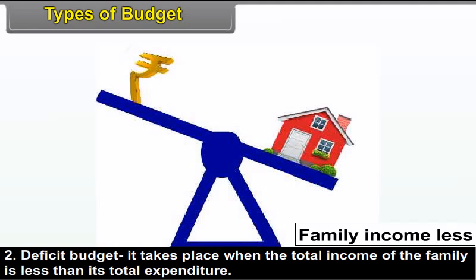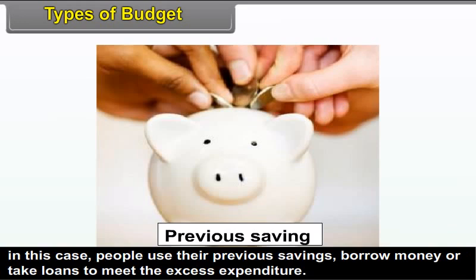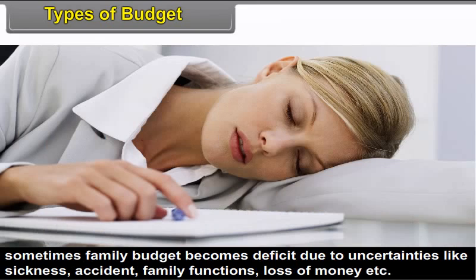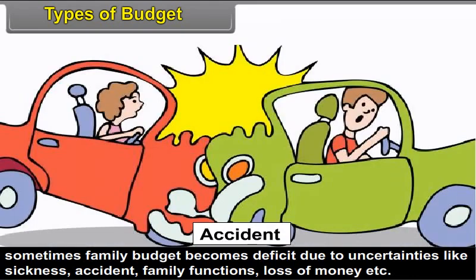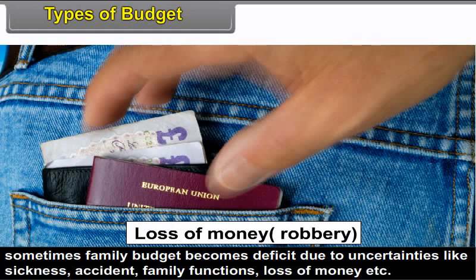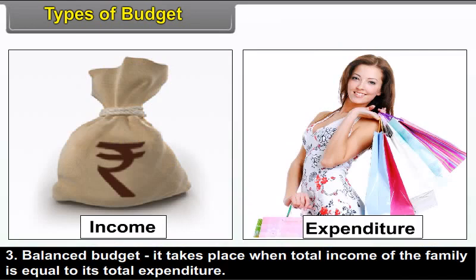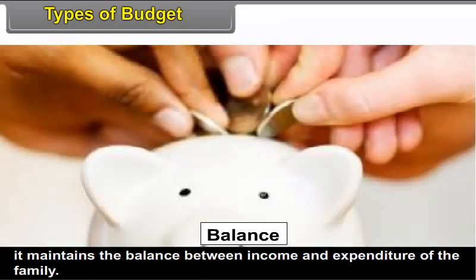In a deficit budget, people use their previous savings, borrow money or take loans to meet the excess expenditure. Sometimes a family budget becomes deficit due to uncertainties like sickness, accident, family functions, loss of money, etc. Balanced budget takes place when total income of the family is equal to its total expenditure, maintaining the balance between income and expenditure of the family.